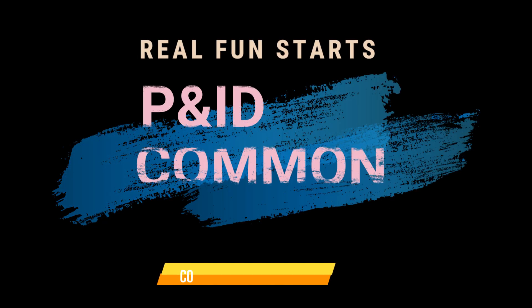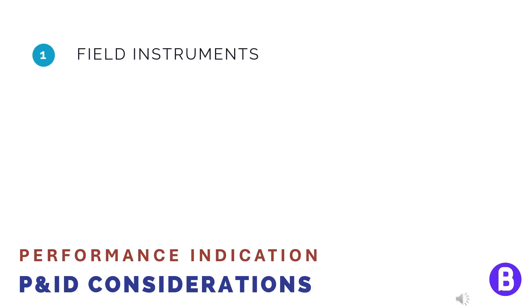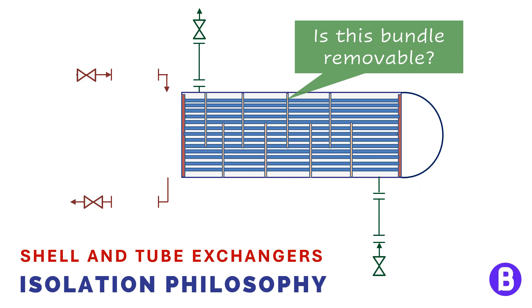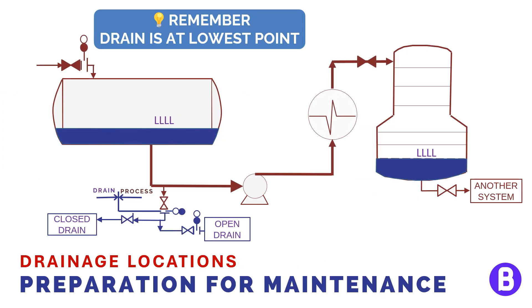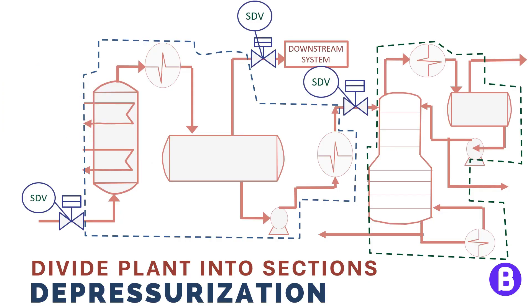Now, let's answer the question of why. We'll cover the common practices used to ease the plant operation. We shall learn how to track the equipment performance effectively, isolate equipment for maintenance, and ensure proper system drainage.